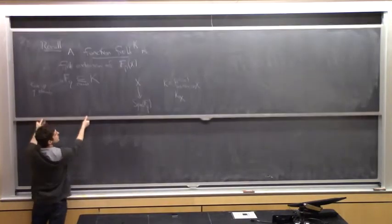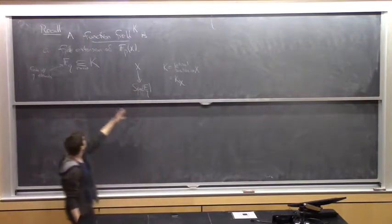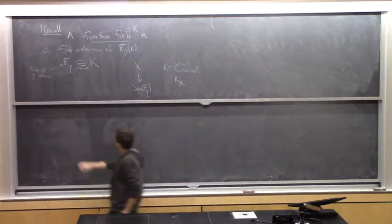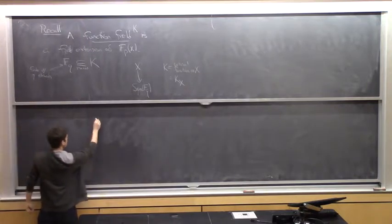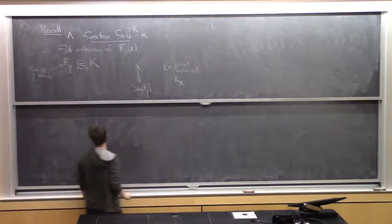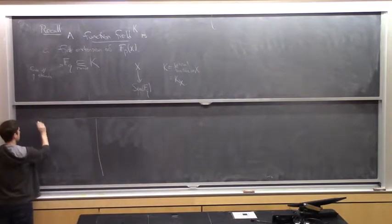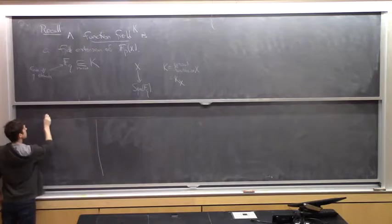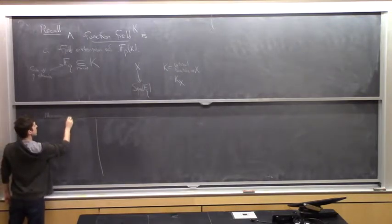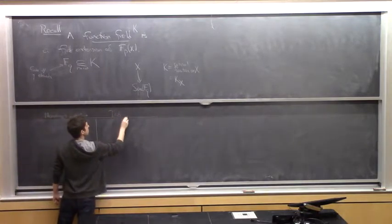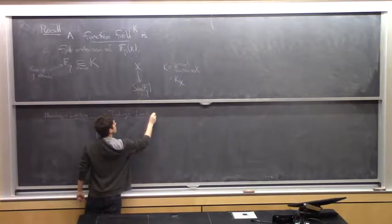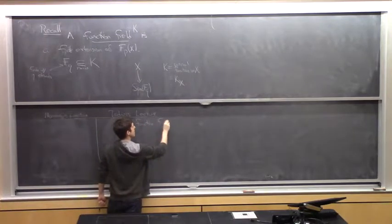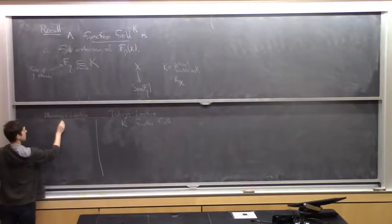The first thing I want to do is introduce some notation for talking about function fields, and also emphasize the analogy with number fields by explaining the analogs of each object I'm going to introduce in terms of Monday's lecture. On one side we'll have objects from Monday's lecture, and on this side we'll have objects from today's lecture. In today's lecture I'm going to be talking about a function field k.